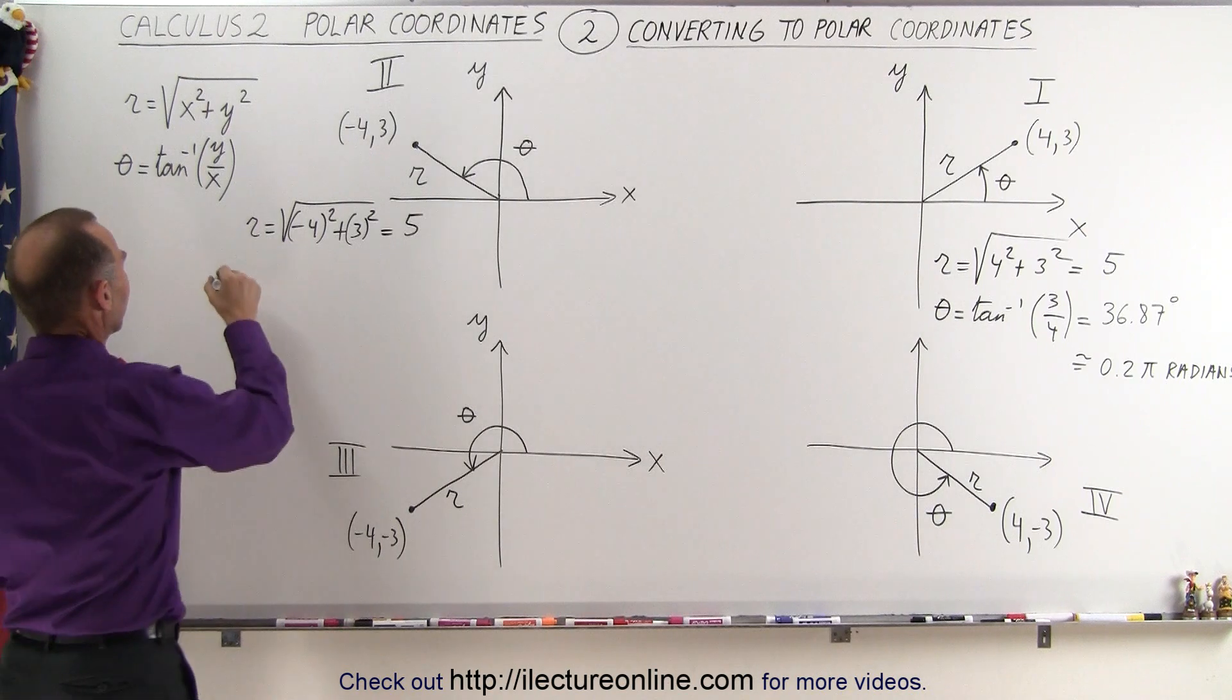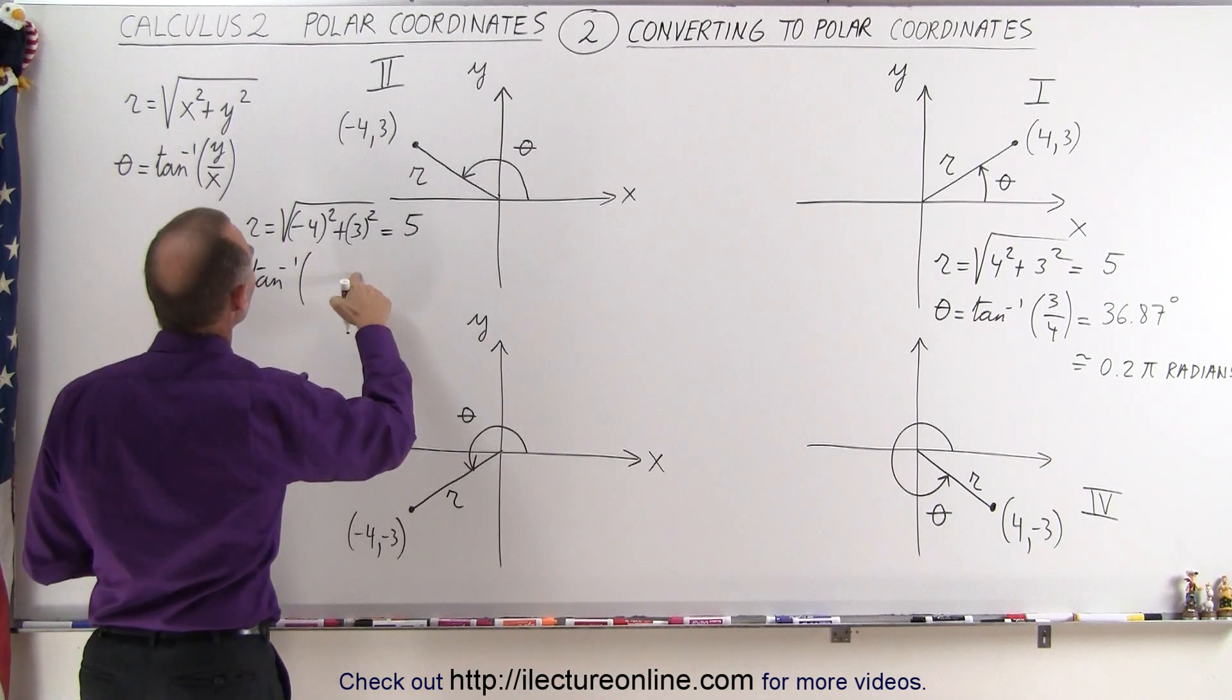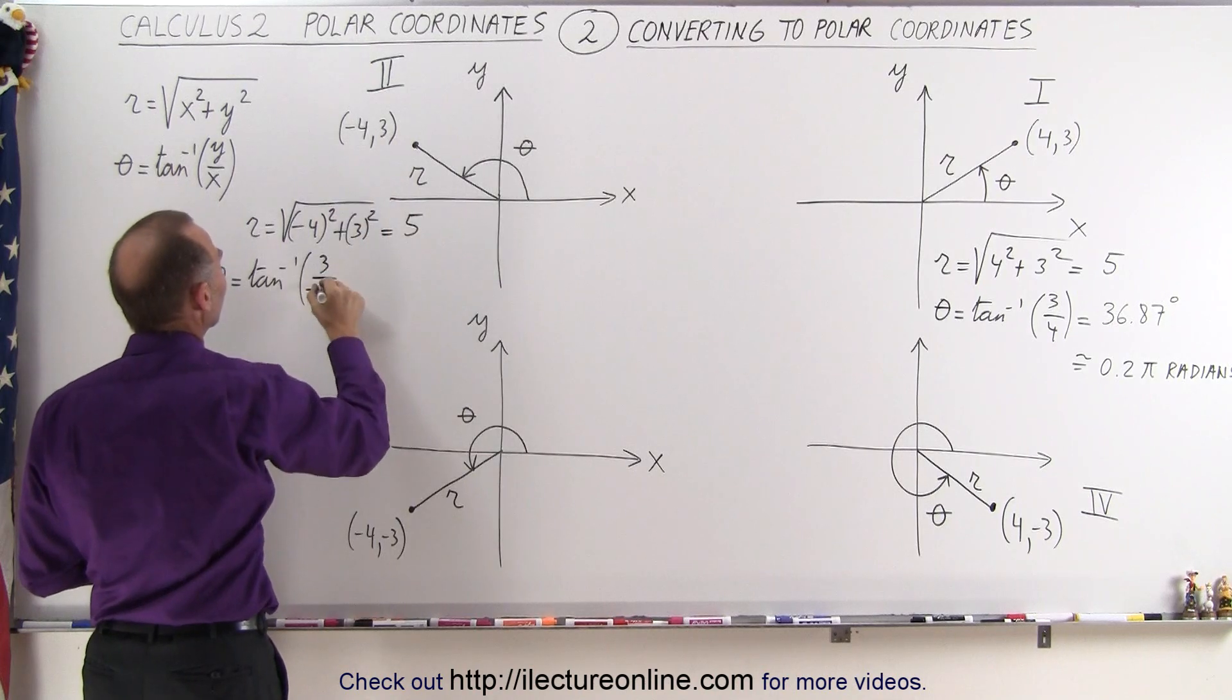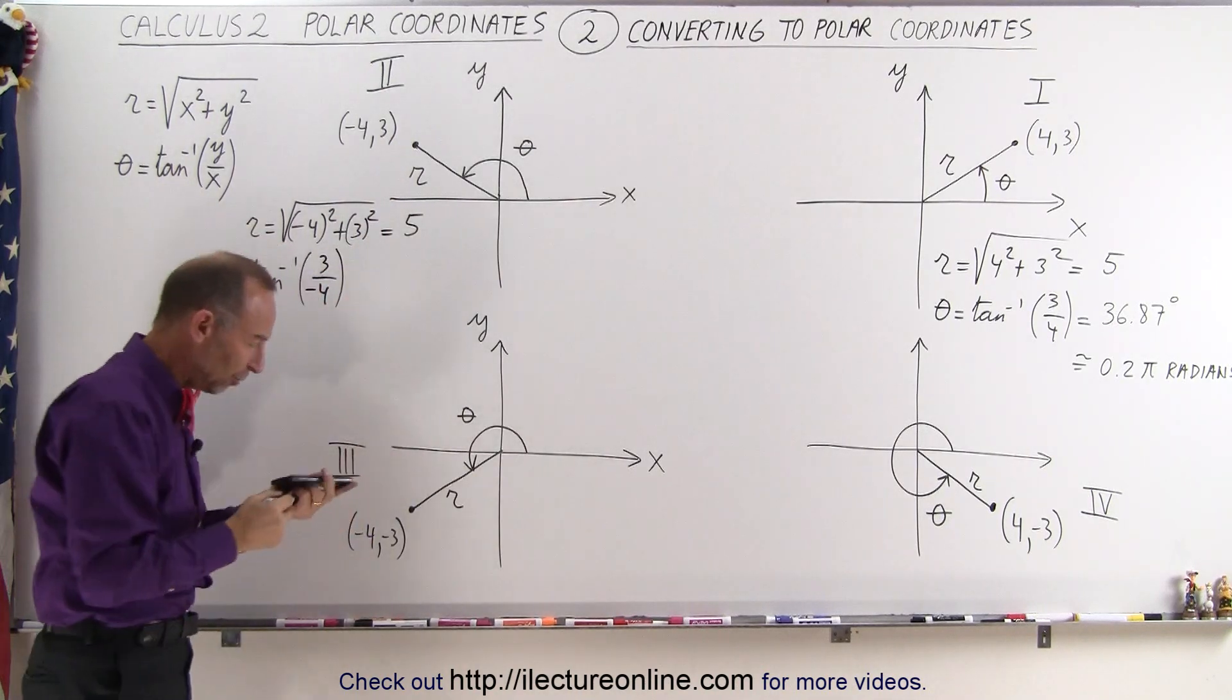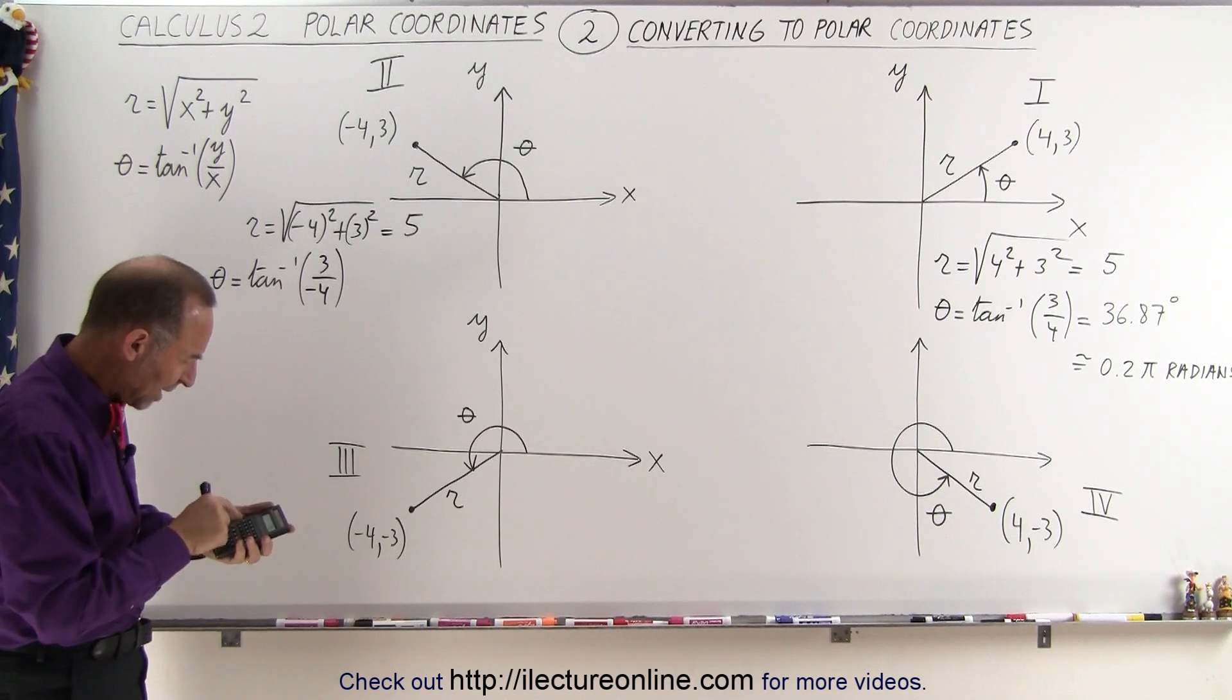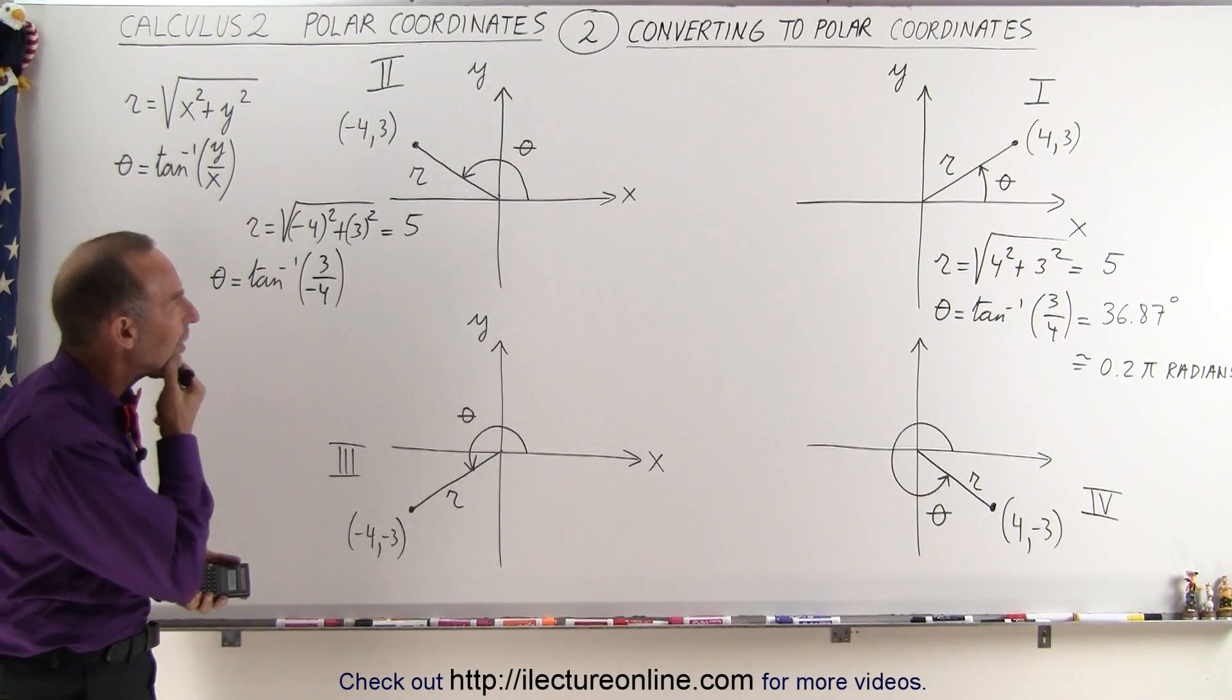How about the angle? Theta is going to be equal to the inverse tangent of y over x. y in this case is 3, and x is a negative 4. So that gives us a minus 0.75. When we plug that into the calculator, 0.75 minus, we take the inverse tangent of that, we get minus 36.87 degrees.